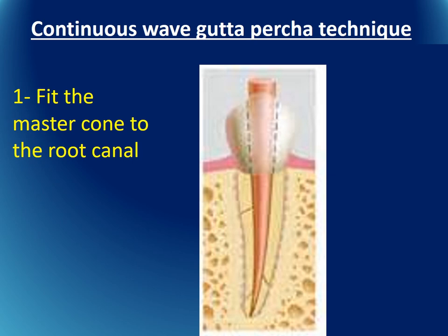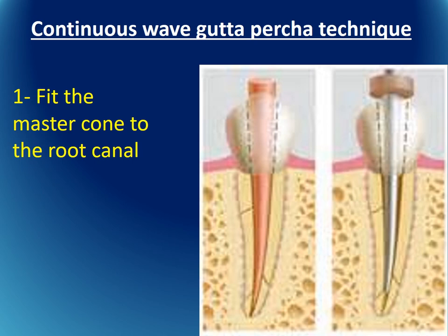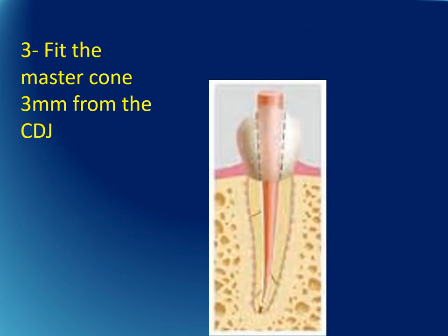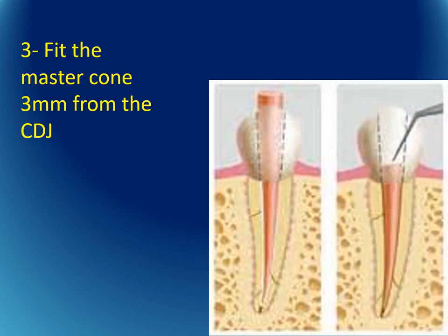A closely related method is the continuous wave gutta-percha technique. Fitting of the master cone is the same as before. The plugger is fitted approximately 0.5 to 2 millimeters from the cemento-dentinal junction, since we will be plugging the cone further apically.